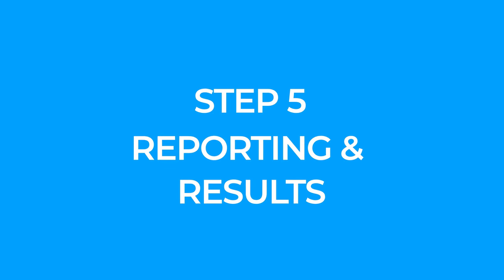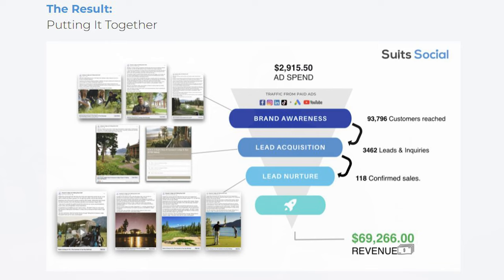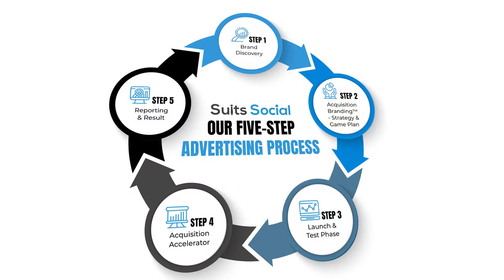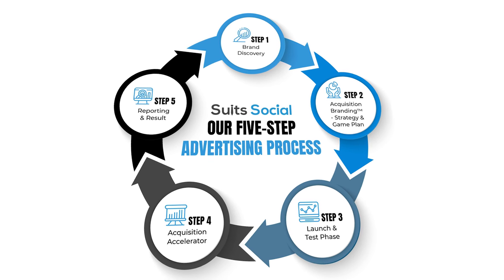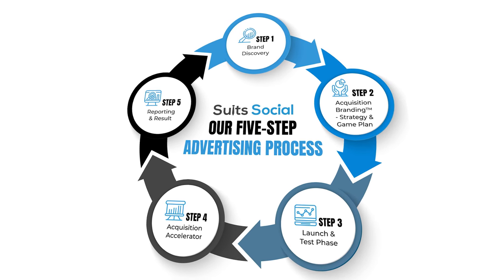Step five is reporting and results. Every 30 days we compile reports tracking all the KPIs that are important to our client, analyze them as a team, and present them — this is what did great, this is what did badly, this is what we're removing next month, and this is what we're doing more of. That constant review cycle keeps us improving. To recap: step one is brand discovery, step two is strategy and game plan using our acquisition branding framework, step three is launch and test, step four is the acquisition accelerator, and step five is reporting and results.